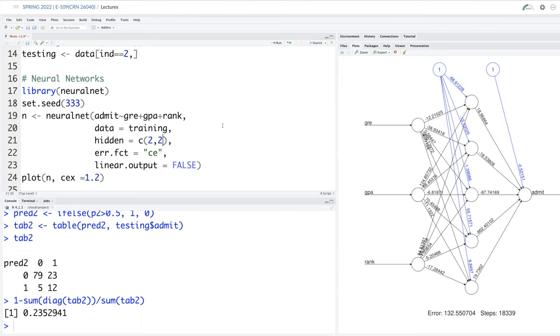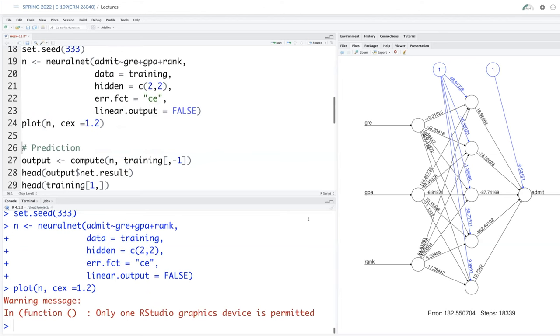If we only input one number, it understands that you want only one hidden layer. And the number you input is basically number of neurons. But if you want two layers, and if you say two comma two, that means two hidden layers. And first hidden layer will have two neurons and second hidden layer will also have two. Quick question, Prof. Rai. There's a number of steps down below 18339. What does that refer to? Iterations. How many iterations it took?